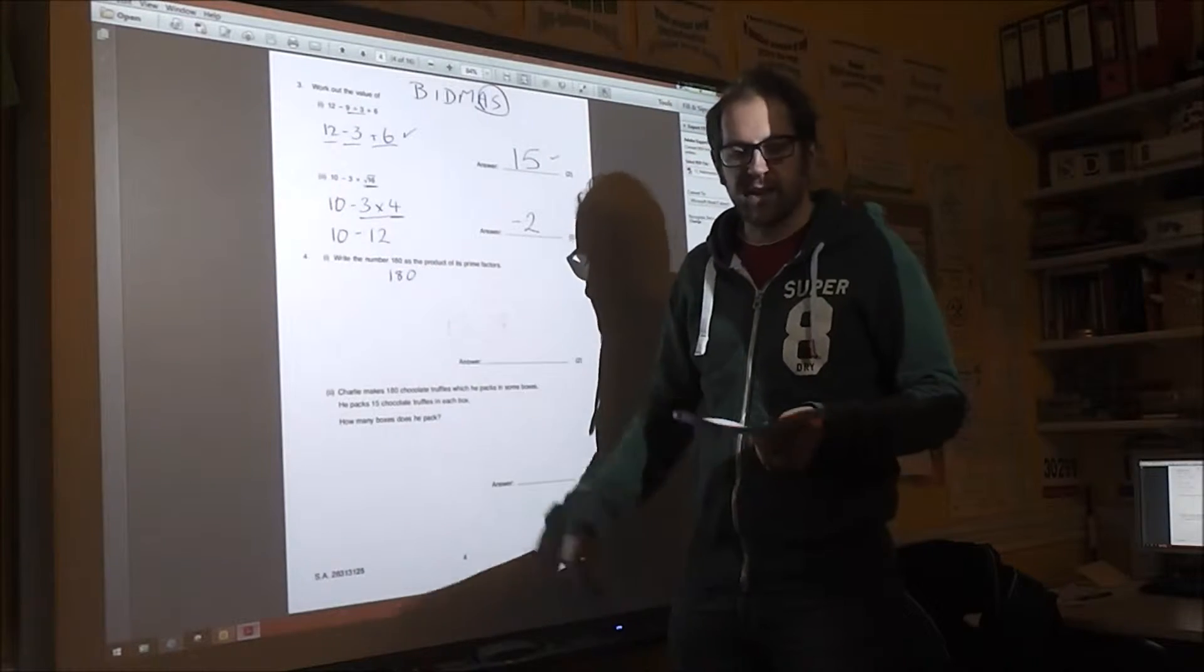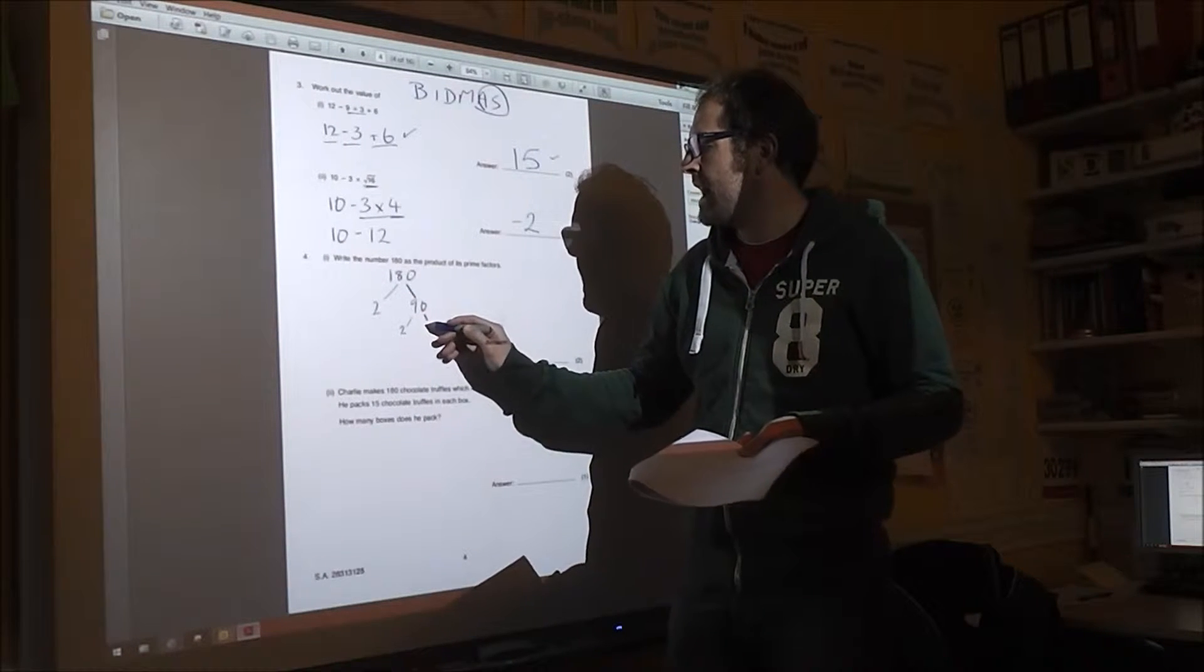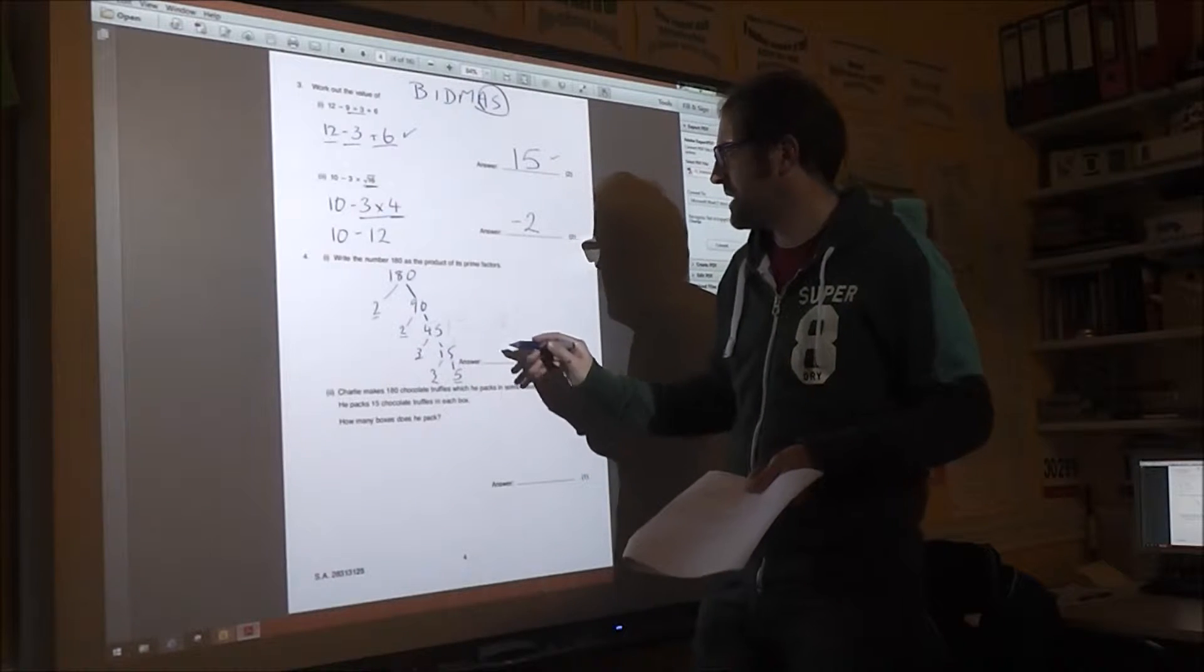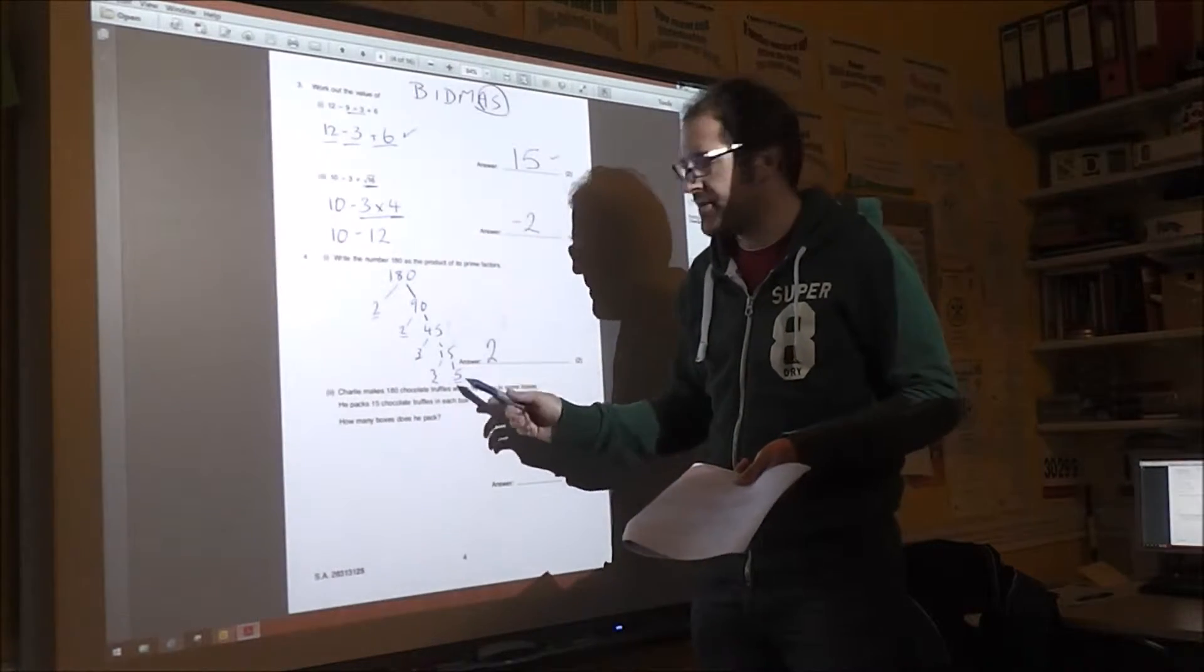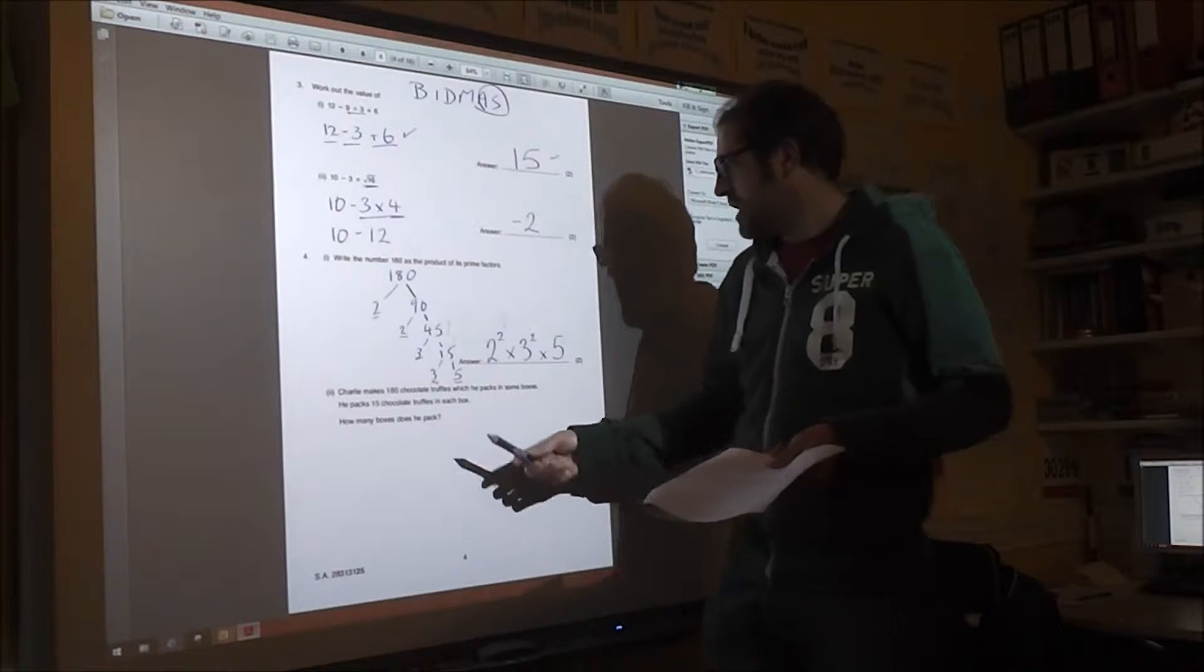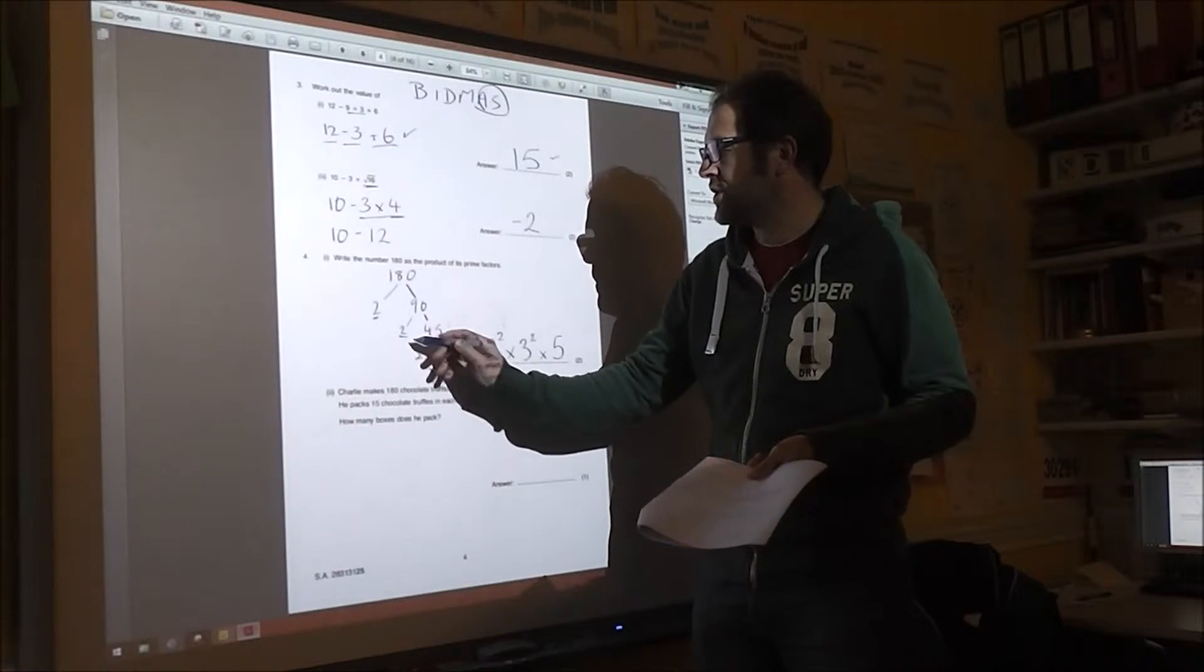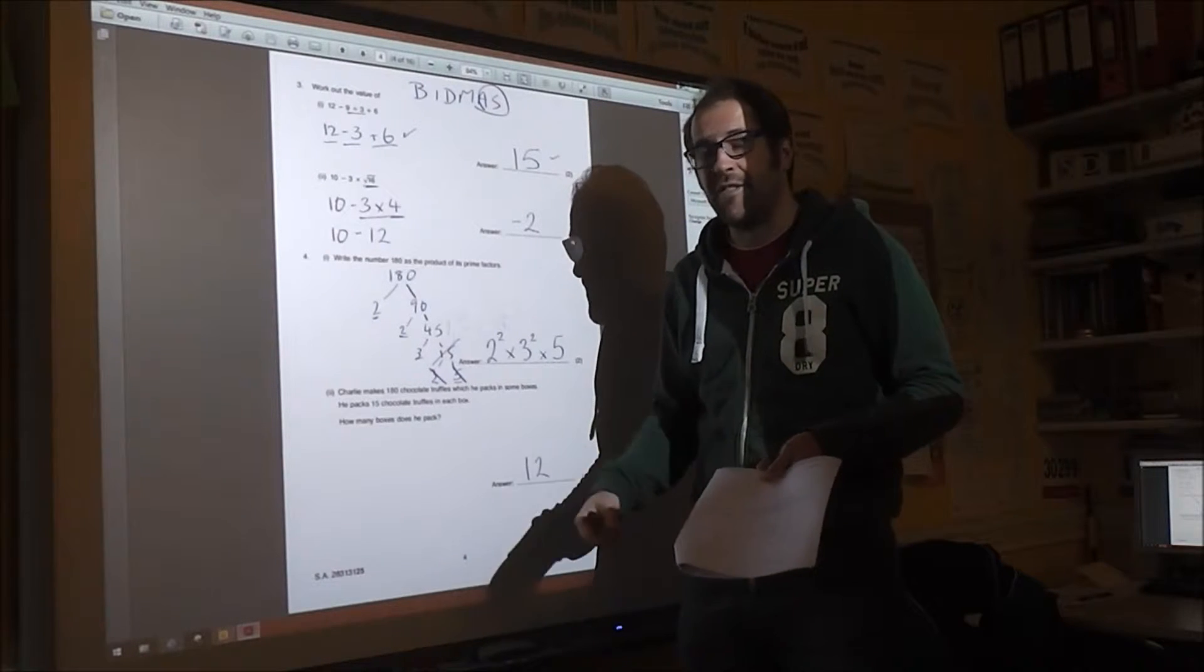On this one, the square root of 16 is 4. So I'm going to write it out again with the 4 there. Next, I multiply. So it's 10 minus 12, which is then negative 2 for the answer to that one. Next on 4, we've got 180 as prime factors. It doesn't matter how you do your prime factoring. I tend to start with 2 and then keep going until it's not even anymore. And then I divide by 3 if it's divisible by 3. I end up with just prime numbers here. It doesn't say with indices. So if you wrote 2 times 2 times 3 times 3 times 5, that's fine. With indices, it's 2 squared times 3 squared times 5.